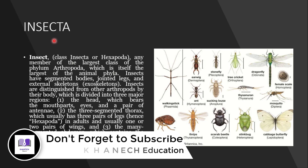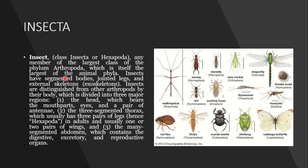The last class is Insecta, also called Hexapoda. It is the largest class of Phylum Arthropoda, which is itself the largest animal phylum. The body has jointed legs, an exoskeleton, and is segmented.